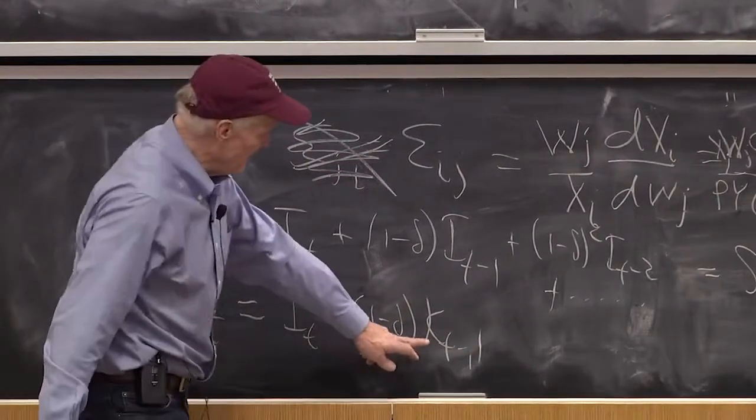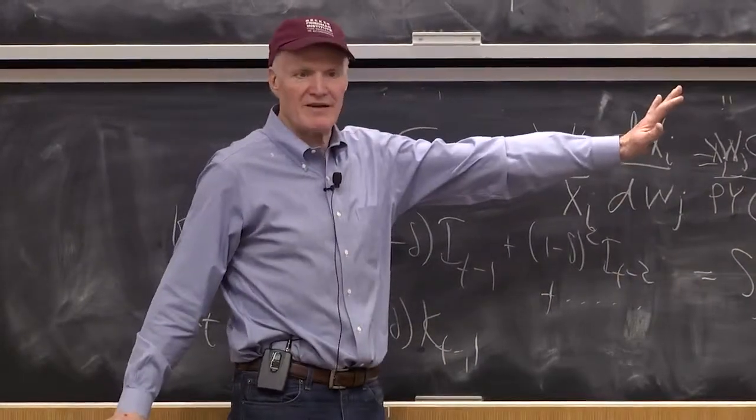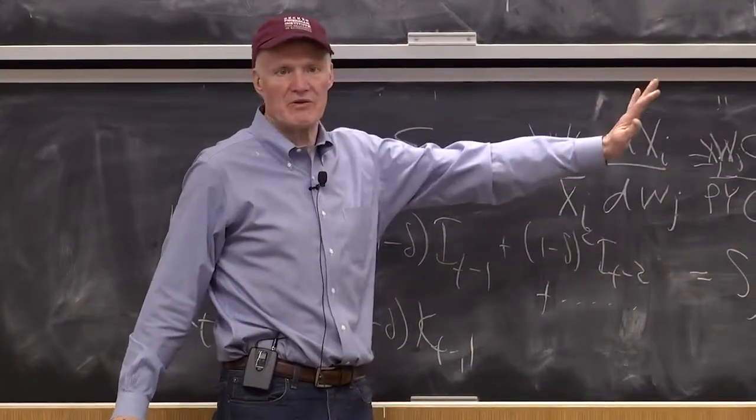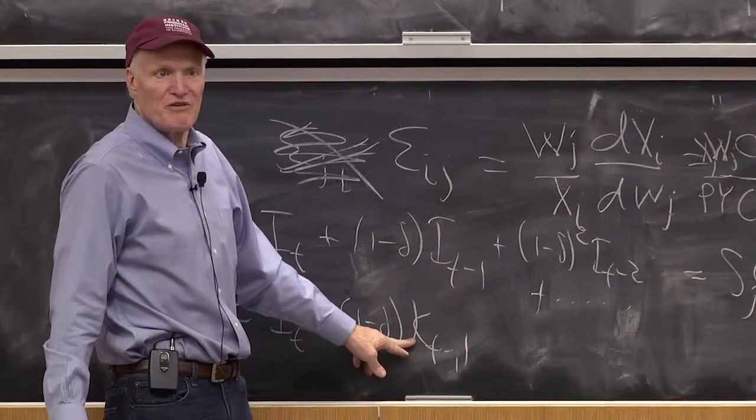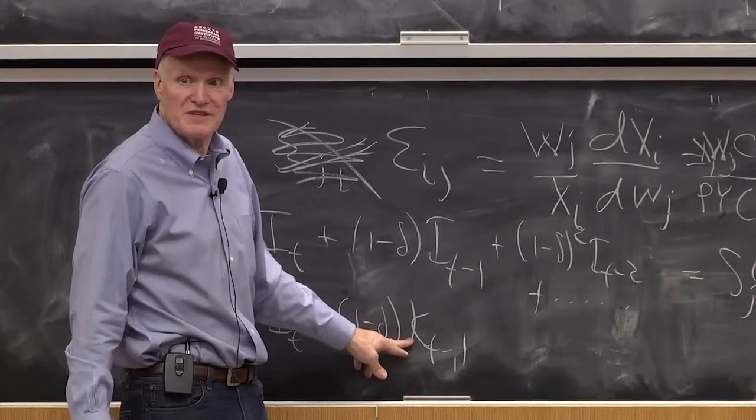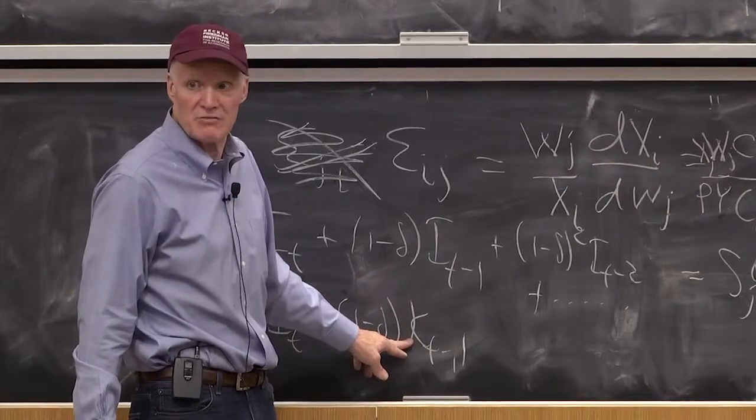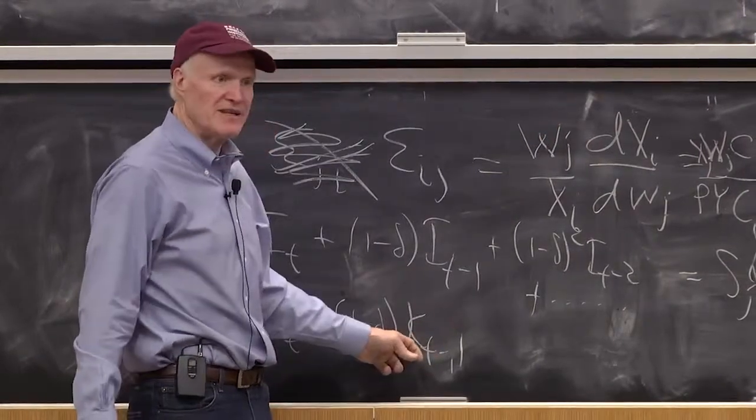Once I've calculated Kt-1, I can forget about all those past I's. This is like a sufficient statistic. For those who like statistics, Kt-1 is a sufficient statistic for past investment - the whole investment history is summarized in Kt-1.